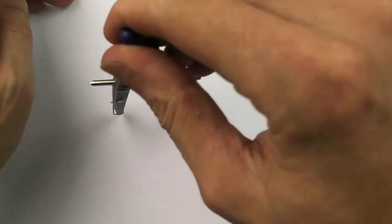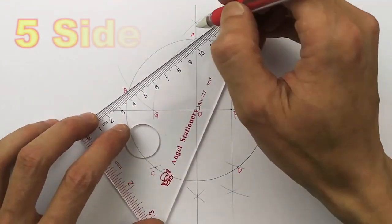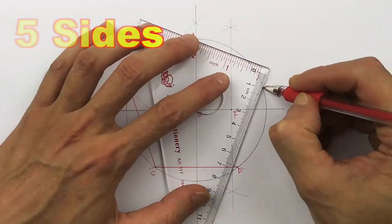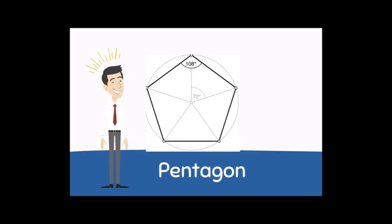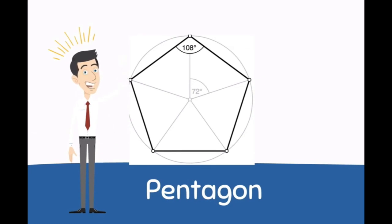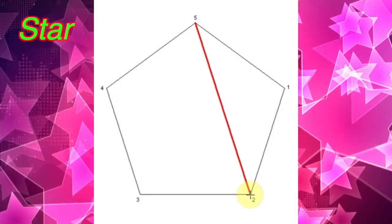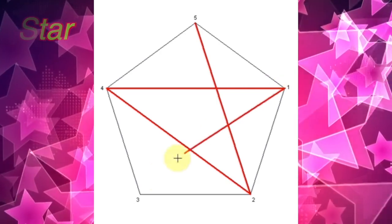First, we draw a circle. Then, we cut it into five equal parts. Notice the five sides. This shape is called a pentagon. We can use a pentagon to draw a star, too.